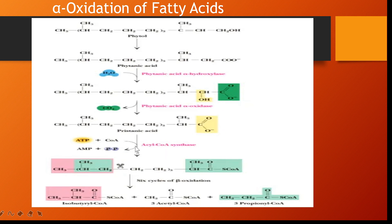Then it will continue with normal beta oxidation. Here you can see carbon 1, 2, 3 — the third carbon is attached with an alkyl group. Normal beta oxidation cannot continue because of the presence of this methyl group in the third position. That is why, to remove this hindrance — to remove this methyl carbon which is present in the third carbon — we are oxidizing this alpha carbon and cleaving this first carbon COOH in the form of CO2.